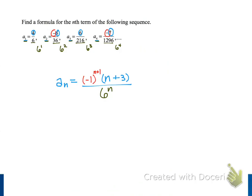So we can use this formula that we developed, negative 1 to the n + 1 power, times the quantity n + 3, divided by 6 to the nth, for integers n that are greater than or equal to 1, and we can use this to find any term that we want in our sequence.